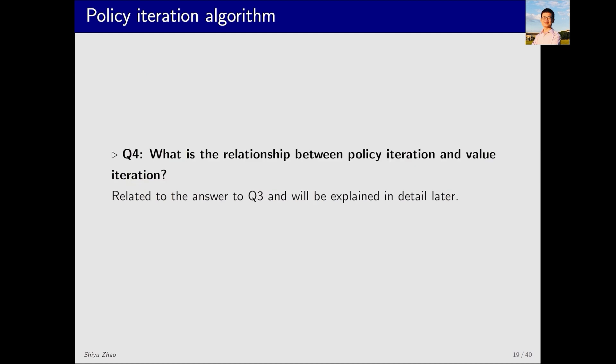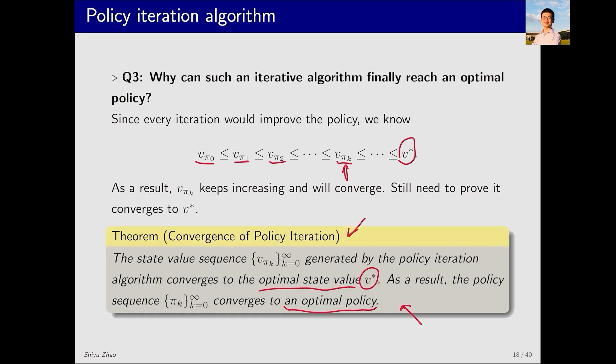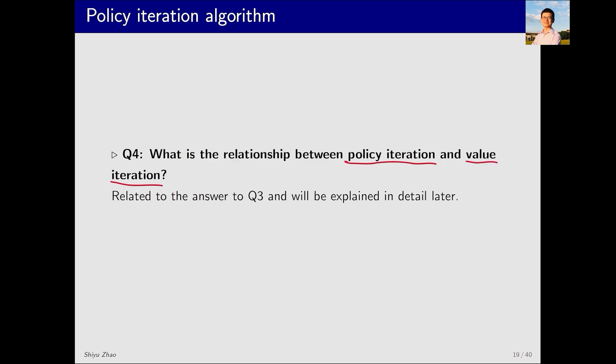The fourth and last question is about the relationship between the policy iteration algorithm and the value iteration algorithm. First, when answering question 3 in the previous slide, the proof of convergence for the policy iteration algorithm actually relies on the result that the value iteration algorithm converges. Thus, it's based on the value iteration algorithm. Additionally, policy iteration and value iteration are actually two extremes of a more general algorithm called truncated policy iteration. This will be discussed later.